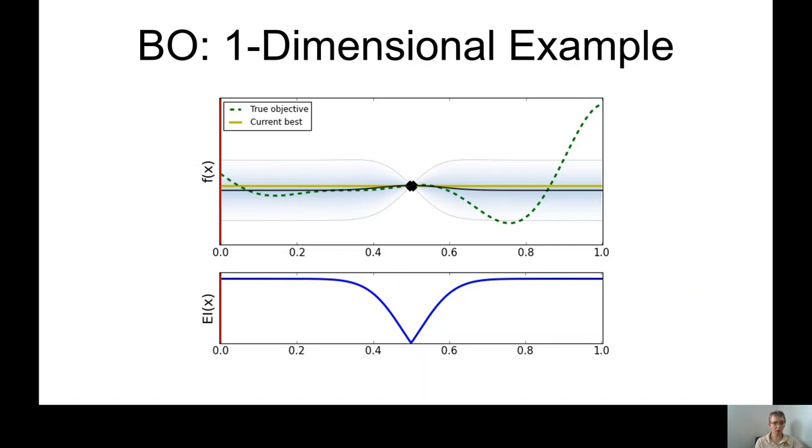On the bottom here, we have another plot, and this is so-called acquisition function. The point of this function is to use mean and uncertainty of the surrogate model to point us towards the next evaluation point. The red vertical line right now on the left most part of the plot shows us the maximum of the acquisition function. So at the beginning, we have just one point in the middle. The model doesn't really know anything about f, so we just pick the left most point of the domain.